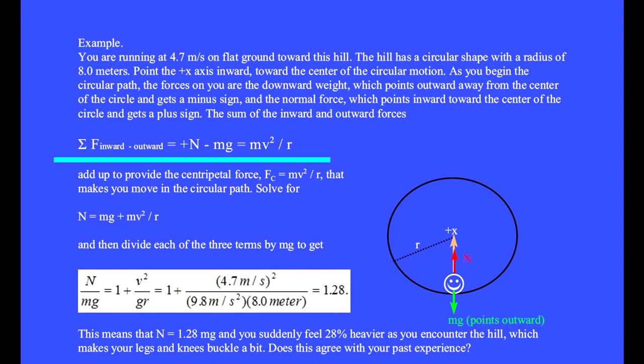The sum of the inward and outward forces is plus N minus mg, and these add up to provide the centripetal force, mV²/R, that makes you move in a circular path.